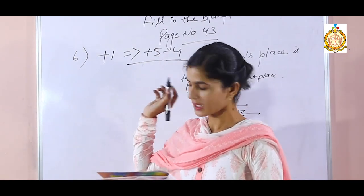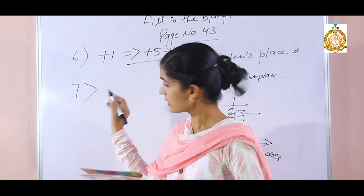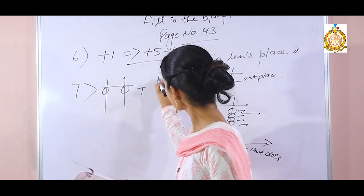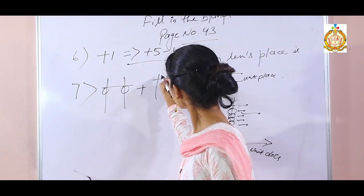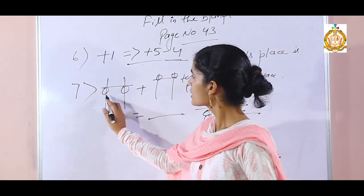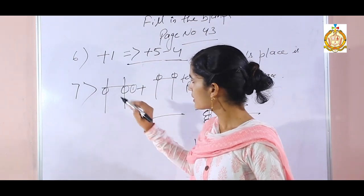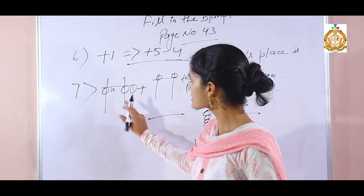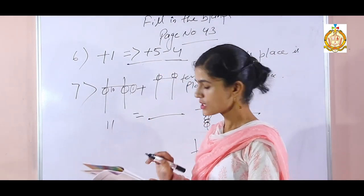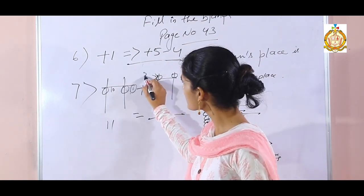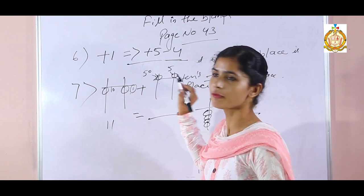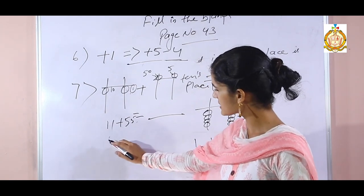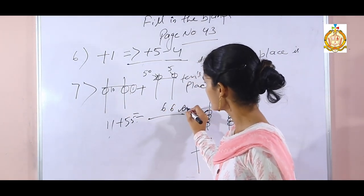Seventh fill-in: beads are given and you have to give the answer. Unit bar 1 has value 1, and the other bead has value 10, so 10 plus 1 is 11. On the other side: upper bead of tens place is 50, upper bead of ones place is 5, so 50 plus 5 is 55. Add 55 plus 11 — the answer is 66.